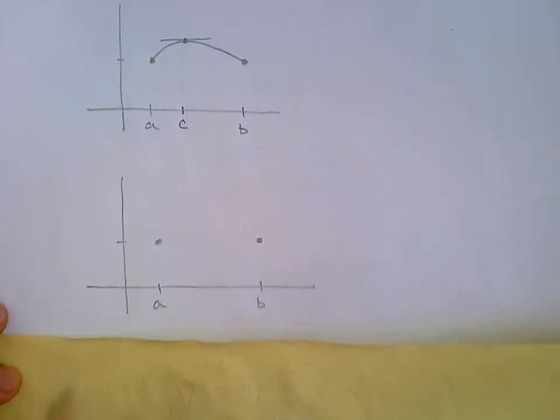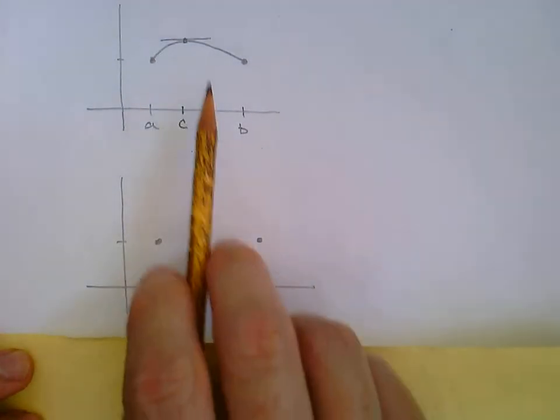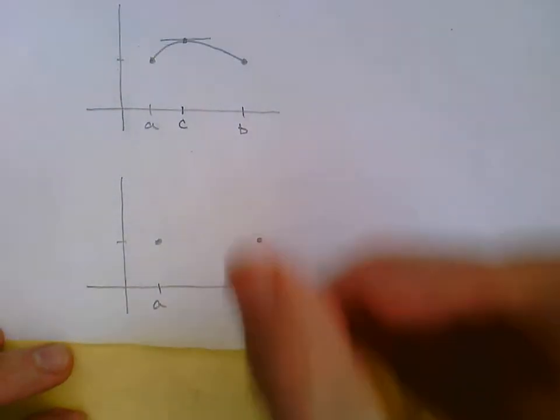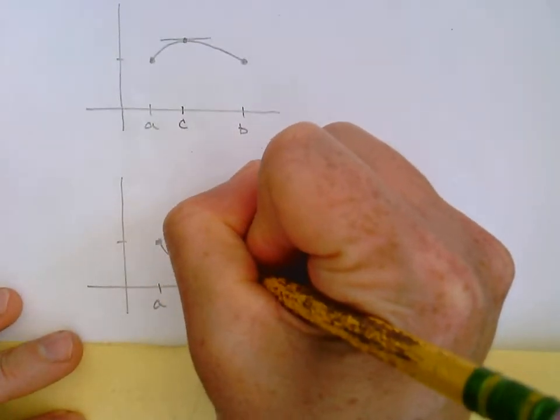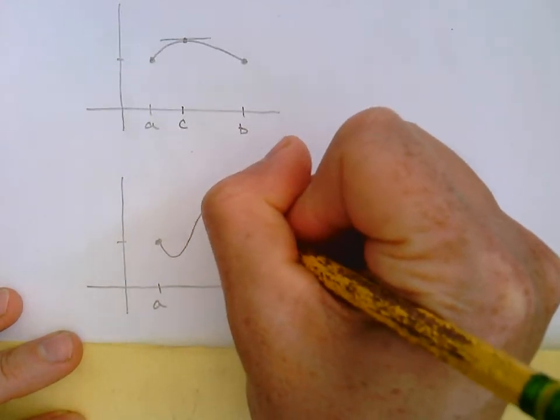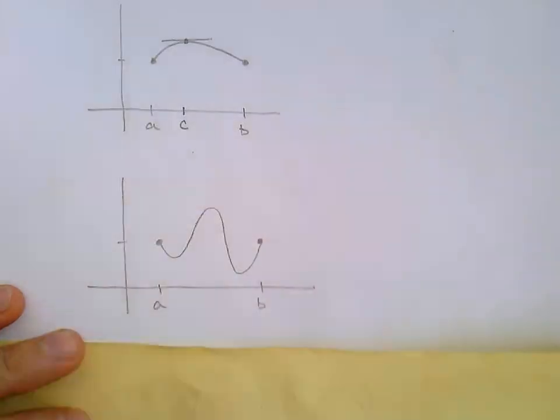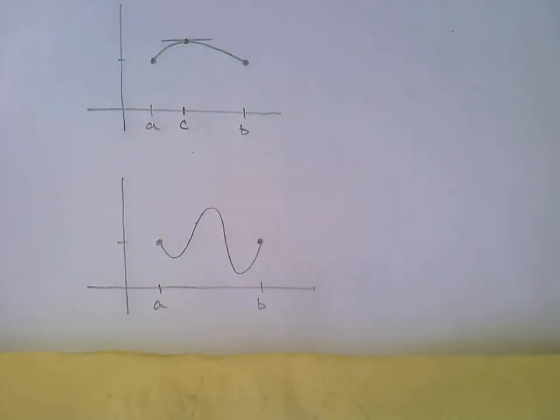That would be a horizontal tangent line. So wherever that occurs, that's c. Okay. A duh, of course, there has to be. Let me give you another drawing that takes it to another level here. So again, I've got a and b and their y values are the same. Let's do something a little bit more complicated than just one up and down.